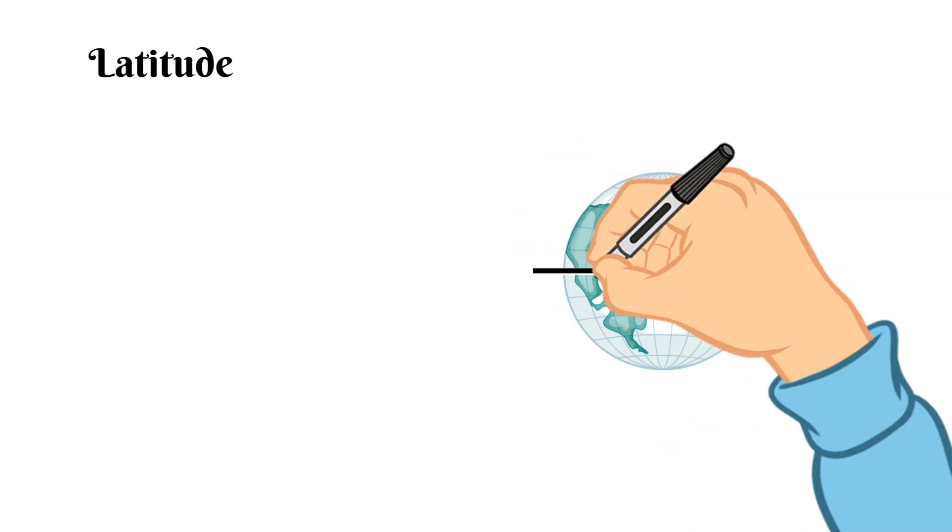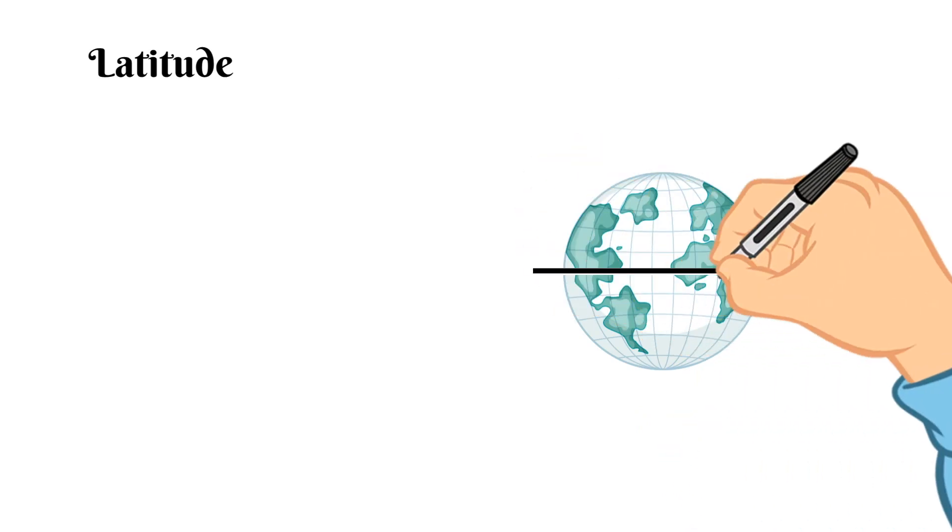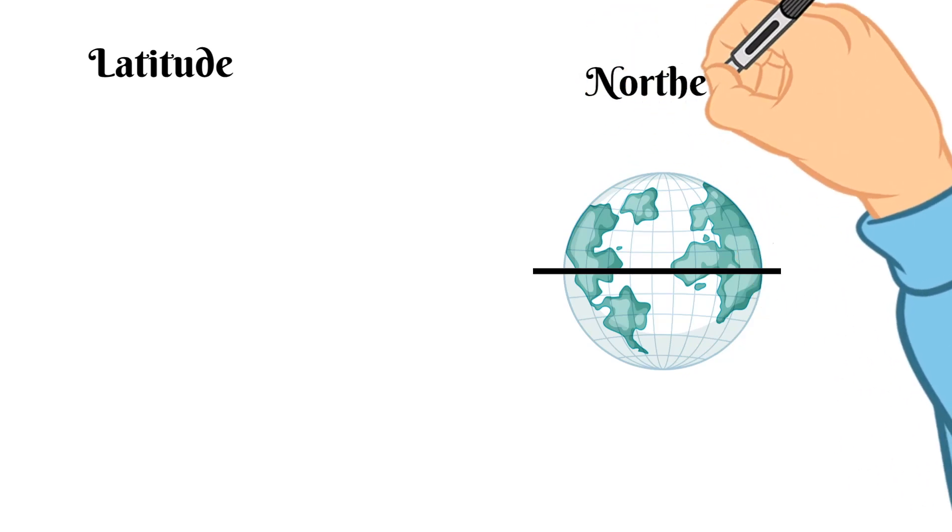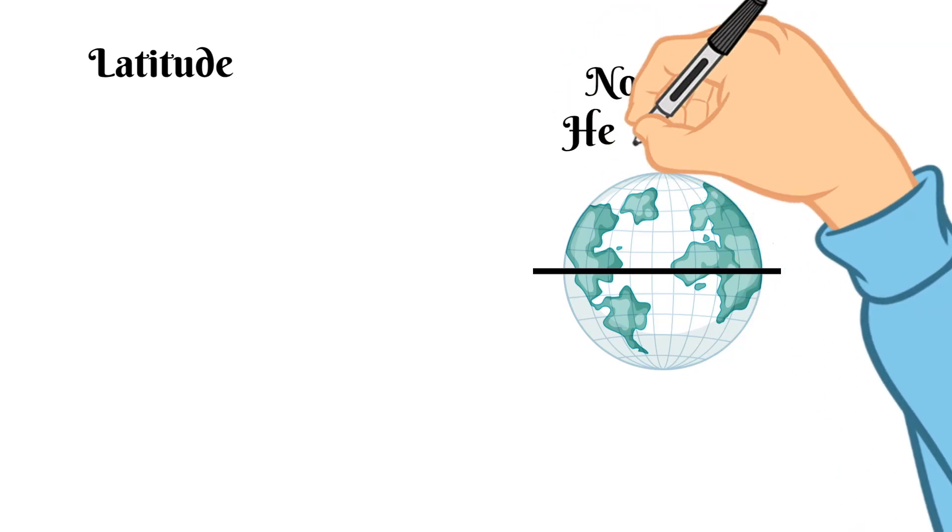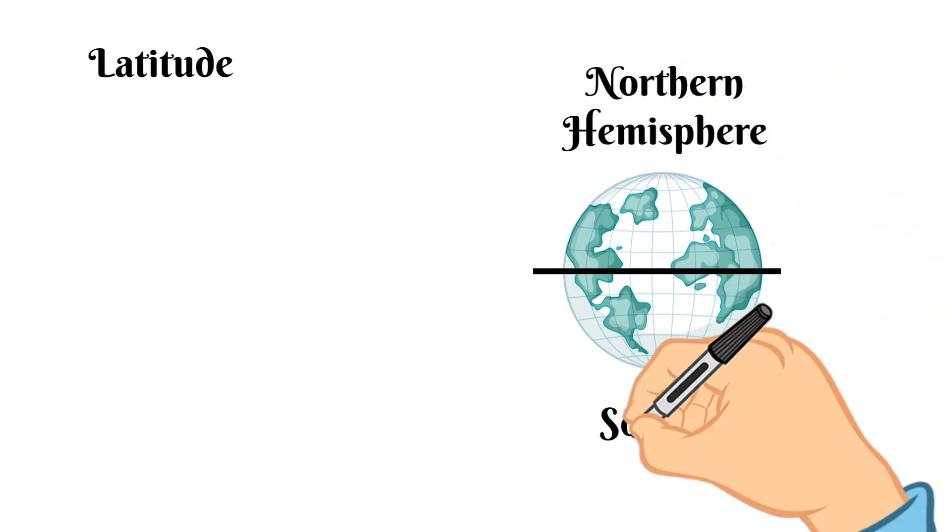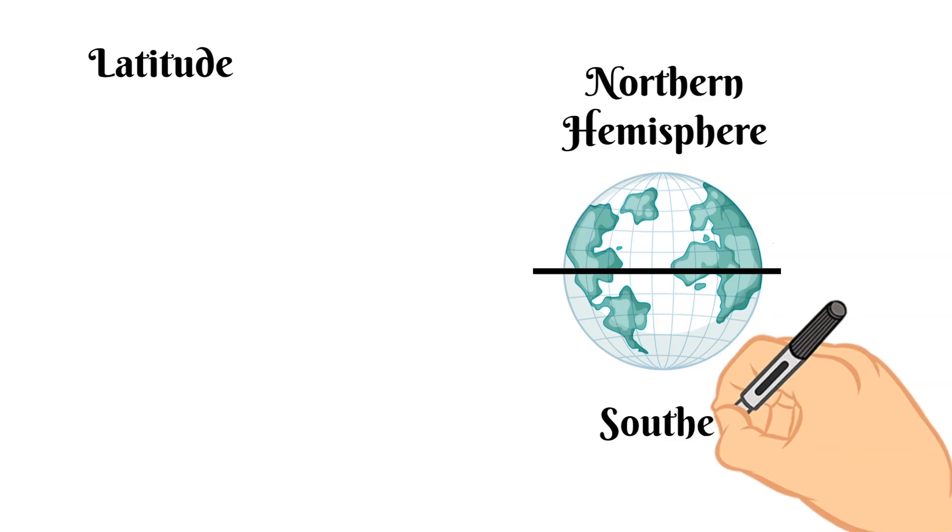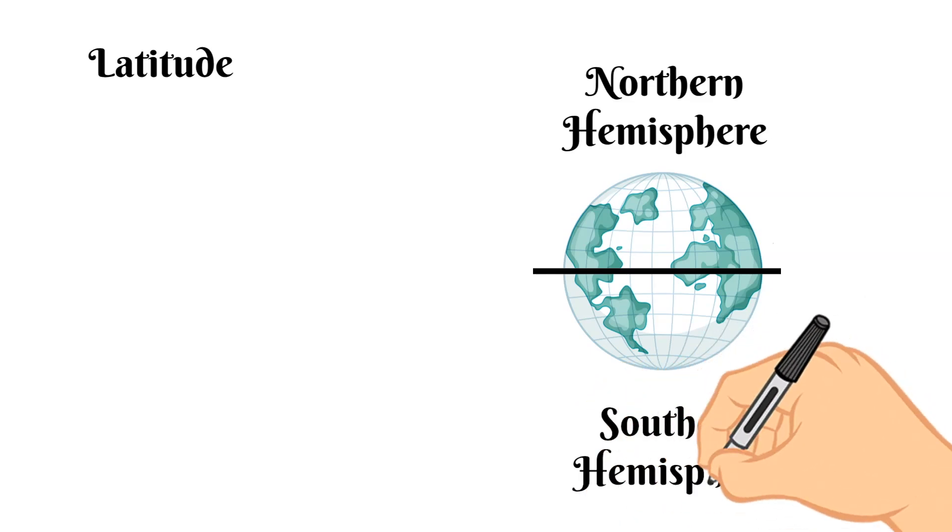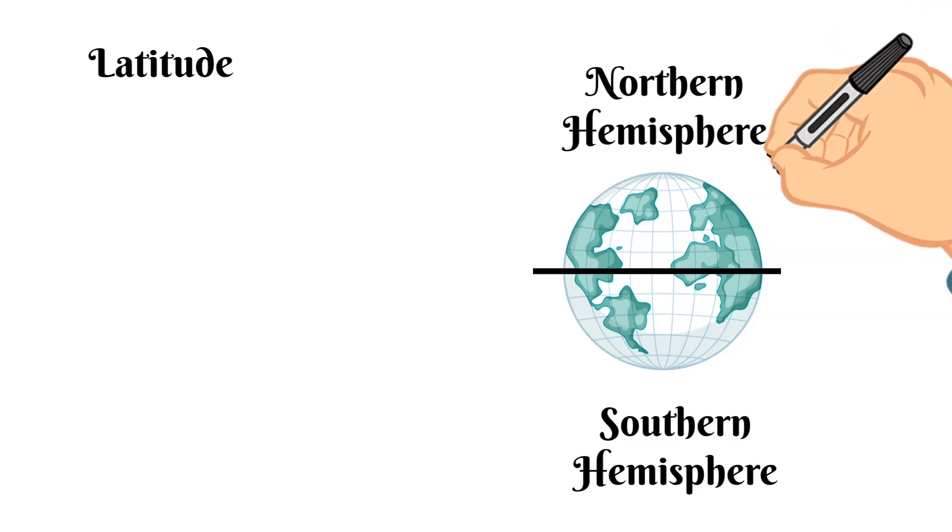Well geographers or people who study the earth have divided the planet into two sets of two hemispheres and we've already talked about the eastern and western hemispheres but we haven't talked about the northern and southern hemispheres. Just like the eastern and western hemispheres are divided by the prime meridian, the northern and southern hemispheres are divided also by an imaginary line called the equator.